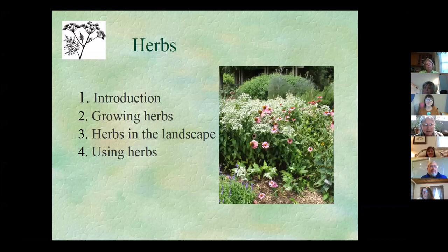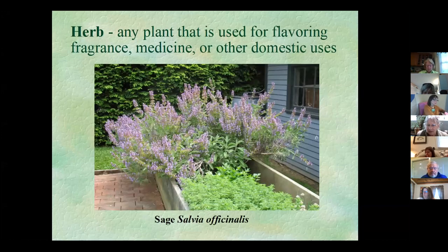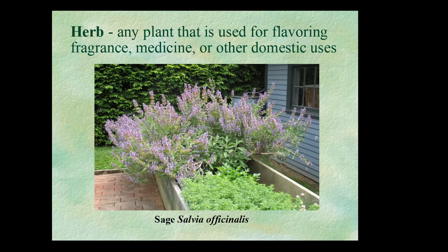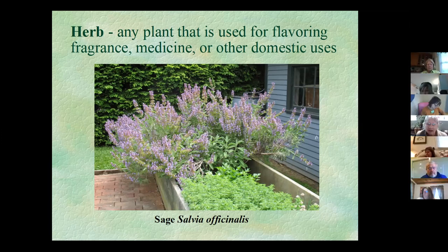We're going to talk about growing herbs and herbs in the landscape, and then Jane's going to talk about using herbs. First we'll define what herbs are. Herbs are any plant that's used for flavoring, fragrance, medicine, or other domestic uses like repelling pests and dyes. We think of herbs as annuals and perennials, but any plant — a tree, a shrub, a fern, a lichen — can be an herb. It can be any part of the plant: the root, the leaves, the stem, the flowers, or the seeds.